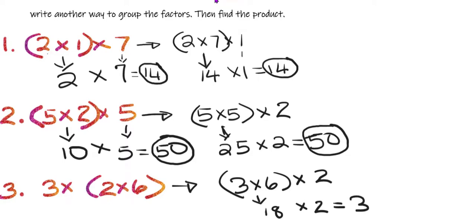Okay. So 36 is my product here. Would 36 be my product here as well? Let's see. Two times six is 12. Now I'm going to multiply 12 by three. Three times 12 is 36.